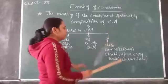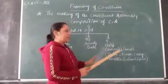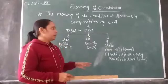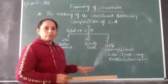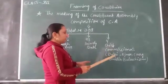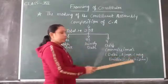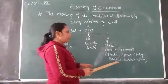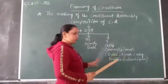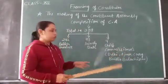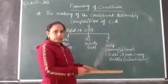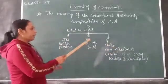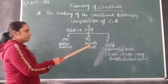The remaining 4 members were from the chief commissioners' areas, which are similar to the present-day union territories. These included Delhi, Ajmer, Coorg (which was in Karnataka at that time), and British Balochistan. So 4 members represented the chief commissioners' areas.